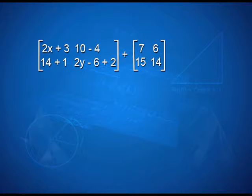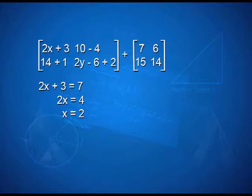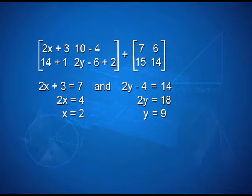Solving the first equation, 2x equals 7 minus 3, which is 4, giving us x equals 2. From the second equation, 2y equals 14 plus 4, which is 18, giving us y equals 9.